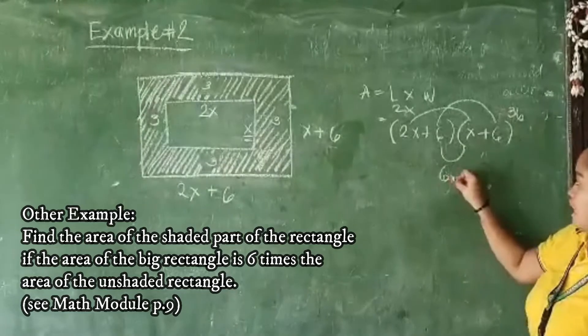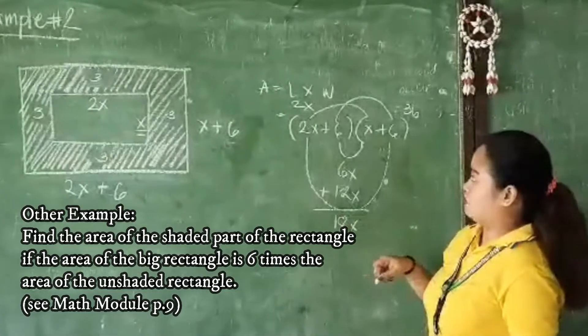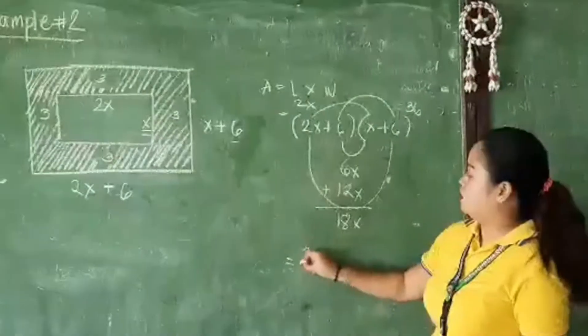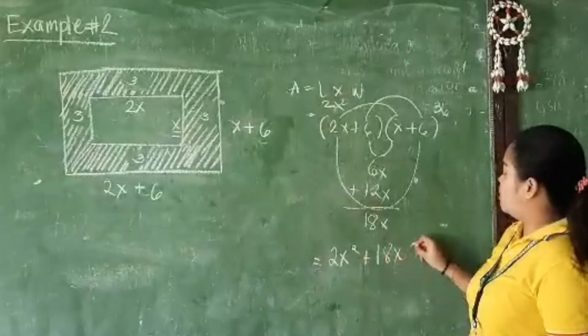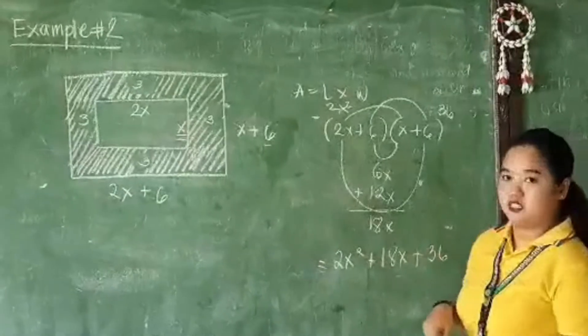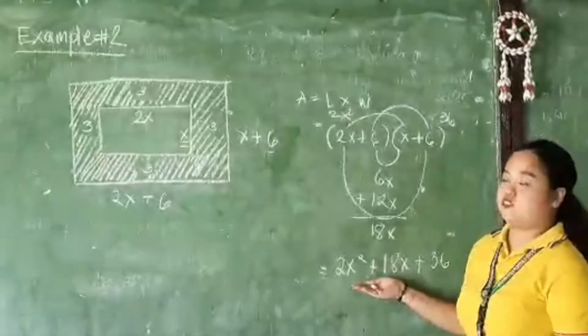6 multiplied by x is 6x. 2x multiplied by 6 is 12x. We need to find the sum of this factor. So we have 18x. So we have quadratic trinomial, 2x squared plus 18x plus 36. So what have you noticed in our quadratic trinomial?